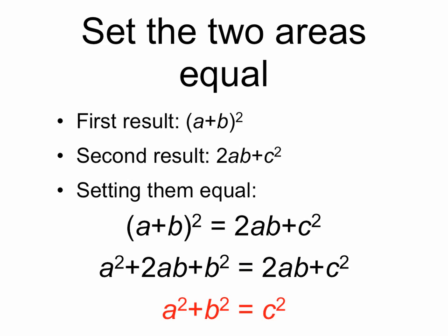Now notice that we didn't make any assumptions about the lengths of a, b, and c, just that a and b were the legs of the right triangle and c was the hypotenuse. So because we didn't make any specific assumptions about a, b, and c, this must be true for all right triangles.